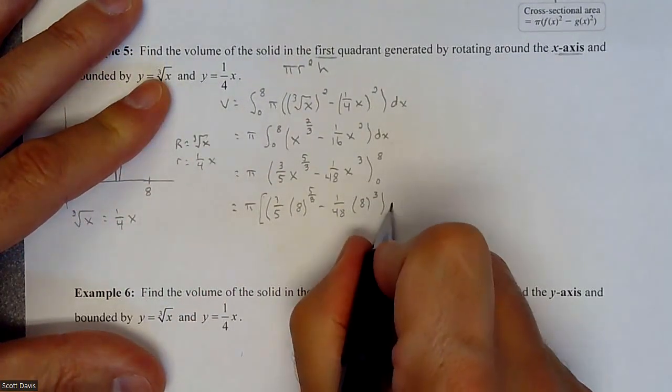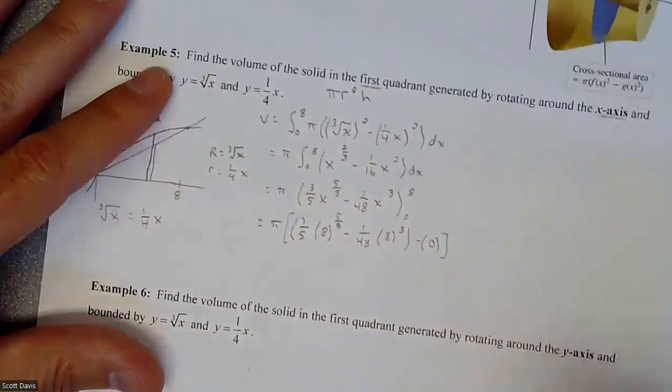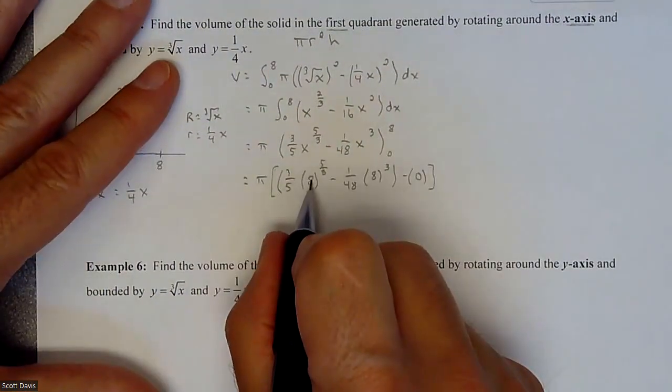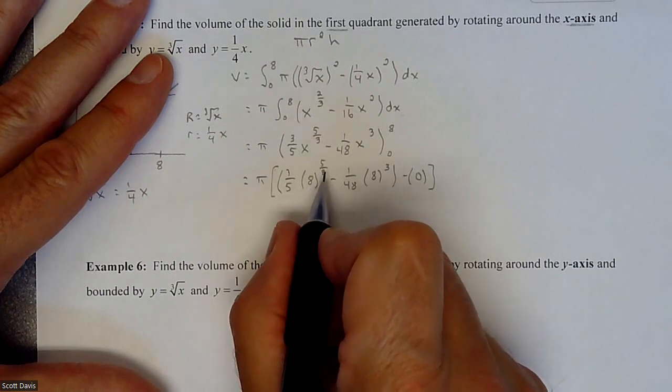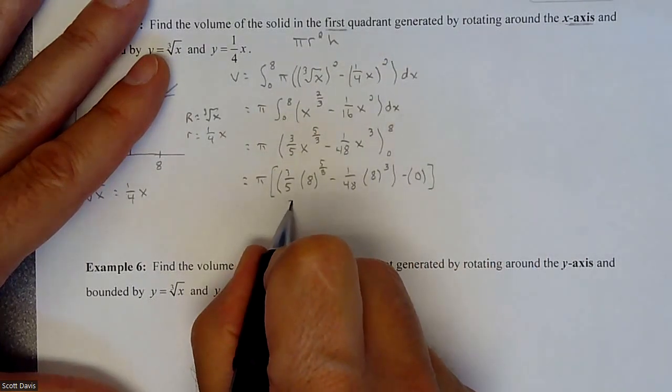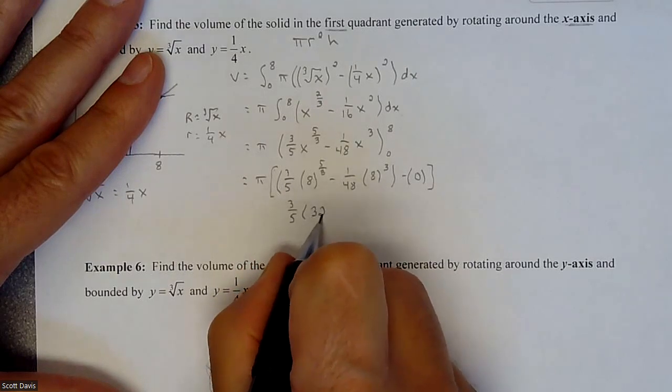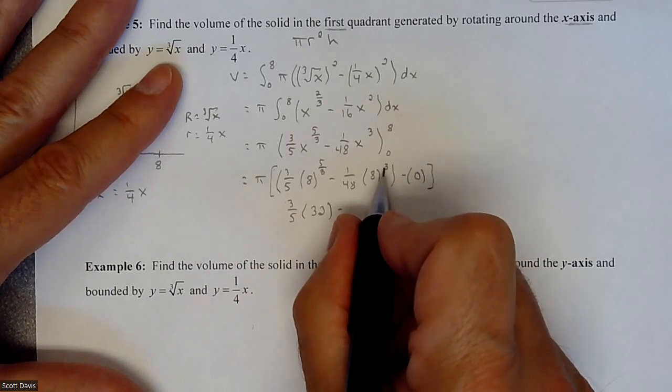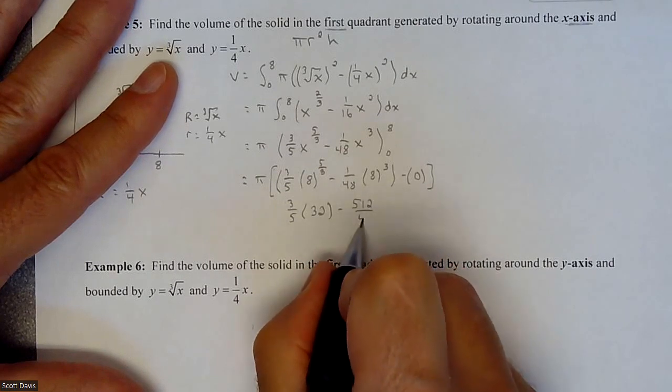Let's do some math here. We have a π, we have a three fifths that we are taking an eight to the five thirds minus one over 48 times eight to the third. That's the eight plugged in. When we plug in zero we would just be subtracting zero out of it. Let's do the math on this eight - we're going to cube root it and then raise it to the fifth power. So cube rooting it gets us a two, and then two to the fifth is 32.